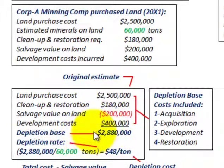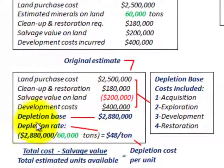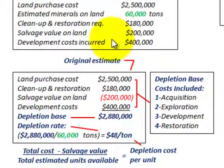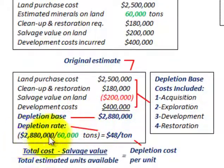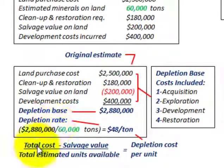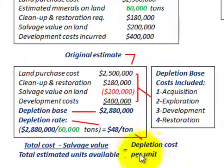This gives us a total depletion base of $2,880,000. The depletion rate is simply the depletion base of $2,880,000 divided by the total estimated minerals to be mined off the land — 60,000 tons. So $2,880,000 divided by 60,000 tons gives a depletion rate of $48 per ton. The equation is: total cost minus salvage value, divided by total estimated units available — in this case tonnage — which gives us our depletion cost per unit of $48 per ton.